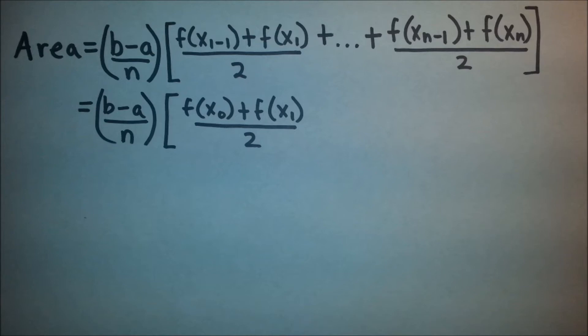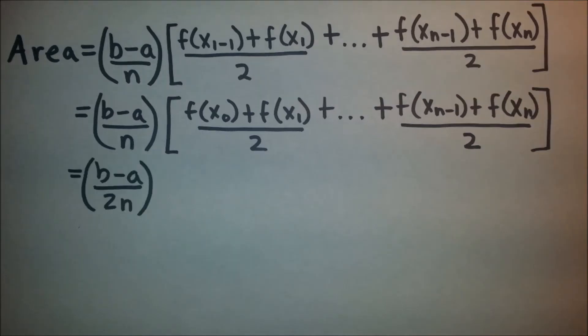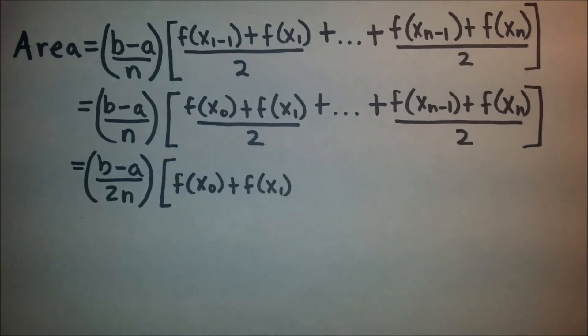Then we simply bring the rest down. Then we are able to move the two out, giving us (b-a)/2n, which leaves us with f(x₀) + f(x₁).